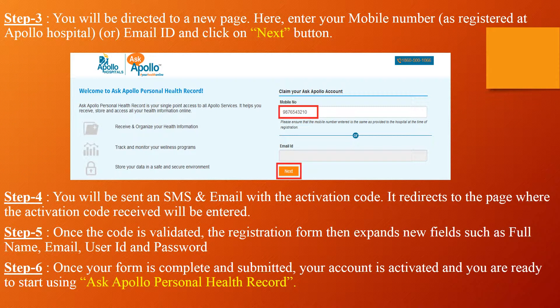You will be sent an SMS or an email with an activation code. It redirects to the page where the activation code received will be entered. Once the code is validated, the registration form then expands new fields such as the full name, email ID, user ID and password. Once your form is complete and submitted, your account is activated and you are ready to start using Ask Apollo Personal Health Record.